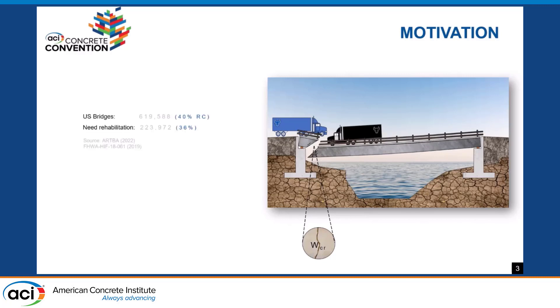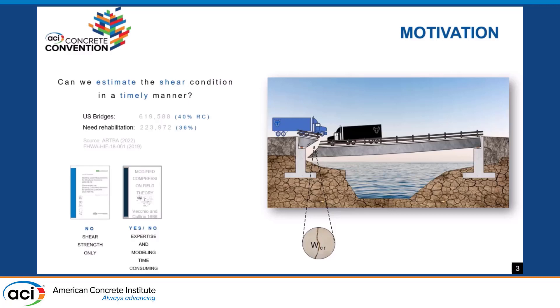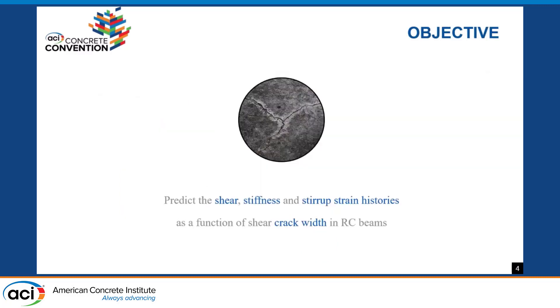It's not news that the number of structures in the U.S. in need of rehabilitation is large, therefore the resources need to be addressed efficiently. How can we estimate the shear condition in a timely manner? If we go by standards, we can only predict the final shear strength. If we go by more refined methodologies, they are time consuming. So here is where machine learning sees its opportunity to make a contribution.